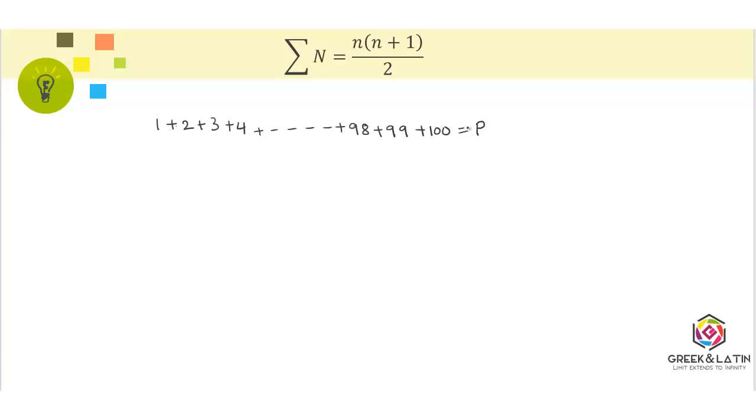What Gauss did was notice that when the first and last numbers are added, the result is 101. When the second and second-to-last numbers are added, like 2 and 99, the result is again 101. Now 3 plus 98 equals 101, 4 plus 97 equals 101.